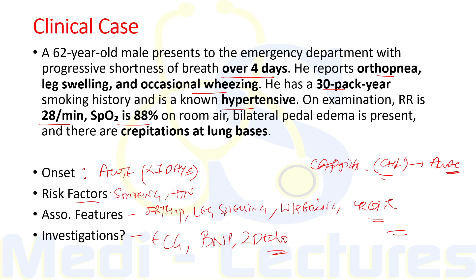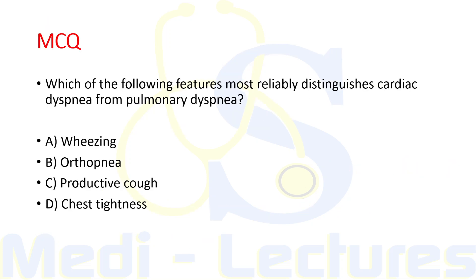We have now discussed in detail how to approach a patient with dyspnea. Here is an MCQ for you to answer in the comment section: Which of the following features most reliably distinguishes cardiac dyspnea from pulmonary dyspnea? Options are: wheezing, orthopnea, productive cough, or chest tightness. Do comment your answer in the comment box.